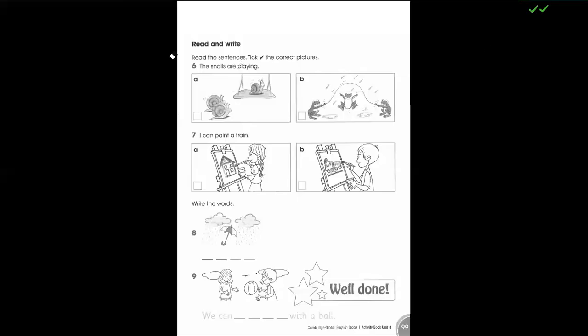In which picture the snails are playing? Yes, Khaled. A or B? Again. The snails are playing. A. Okay. I can paint a train. A or B? B. The boy is painting a train.